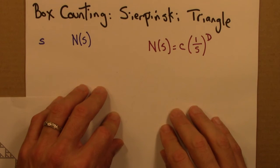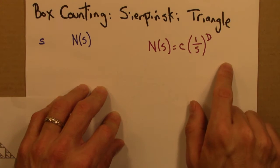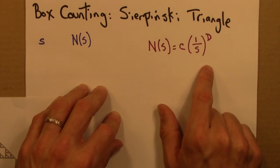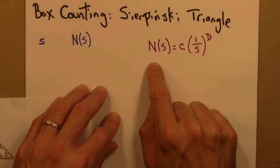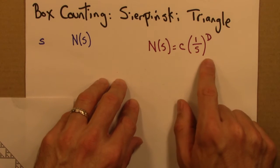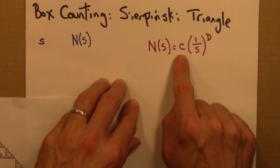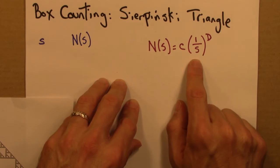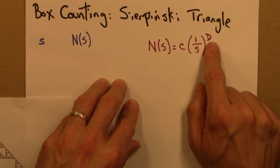I ended the previous video by suggesting the following relationship between N(s) and s. So N(s) is the number of boxes of side s needed to cover a certain object, and that will be given by this expression typically, where c is a constant. We have 1 over s to the d, where d is a dimension.